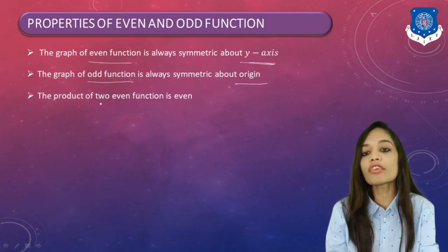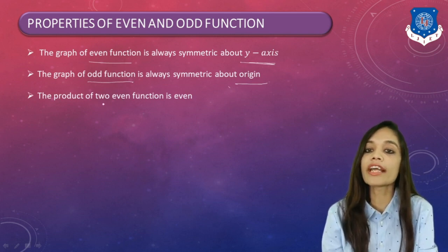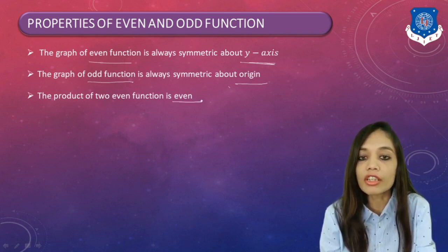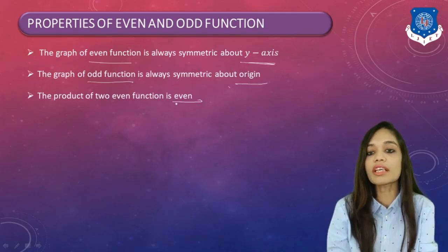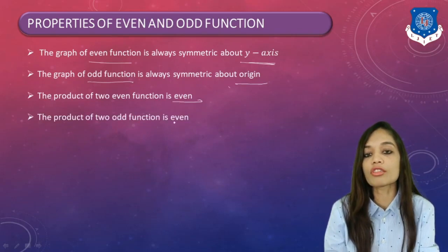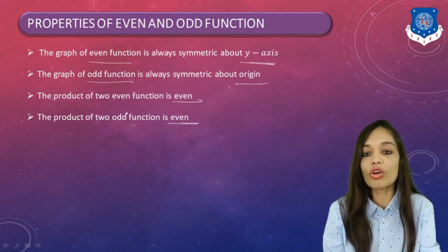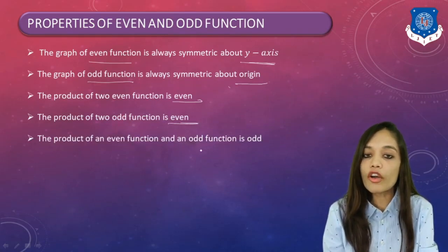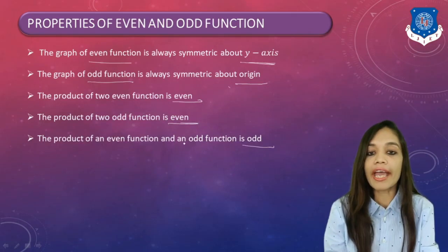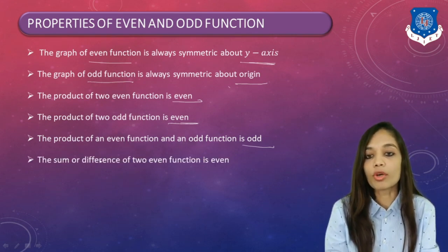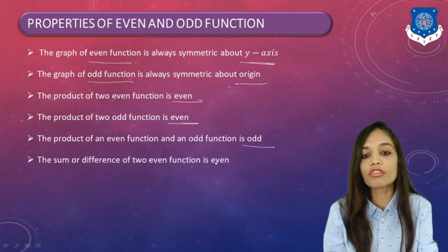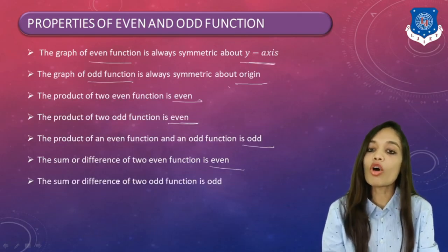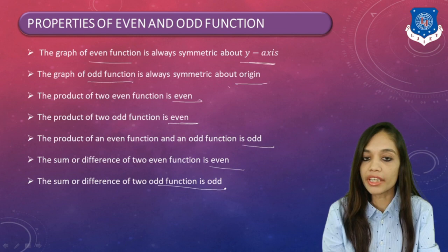Now let us look at the properties of even and odd functions. The product of two even functions is even — for example, x² and cos x. The product of two odd functions is also even — for example, x and sin x. The product of an even and an odd function is odd — for example, x and cos x. The sum or difference of two even functions is always even, and the sum or difference of two odd functions is always odd.